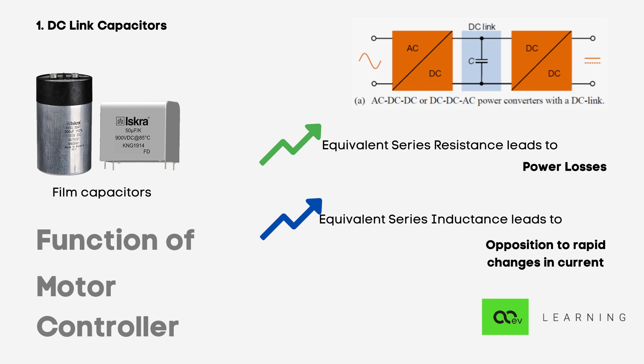Increase in ESR will lead to power losses and increase in ESL will lead to opposition to rapid changes in current, both of which are undesirable. Also, the volumetric efficiency increases with the use of film capacitor over its counterparts.